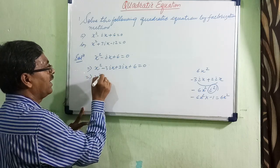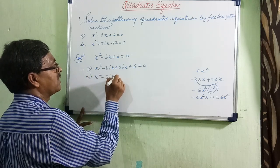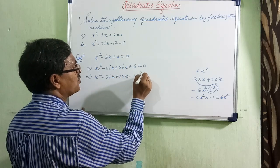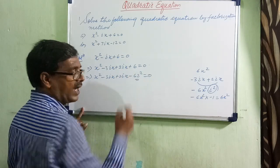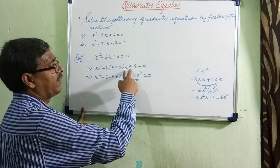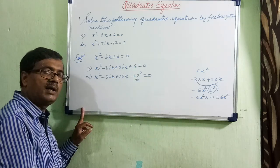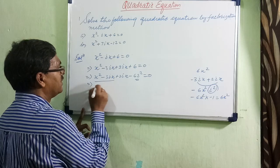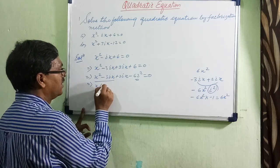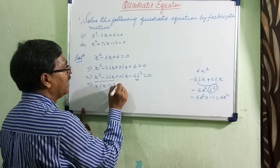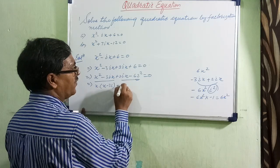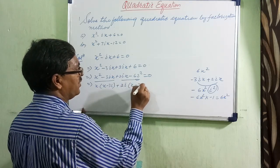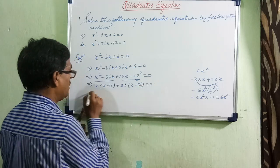One more thing we can say: x squared minus 3ix plus 2ix minus 6i squared is equal to 0, because i squared equals minus 1, so minus times minus gives plus 6. Now take x as a common factor from the first two terms to get x minus 3i, and then take 2i as a common factor from the last two terms, leaving x minus 3i.